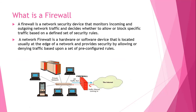A network firewall can either be a hardware or a software device, and it's usually located at the edge of a network and it provides security. Let's get started with the lab where we are going to configure a simple ACL on the router and convert the router to a firewall.